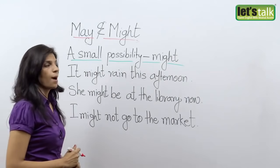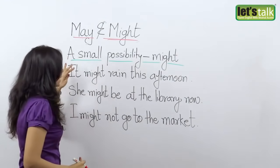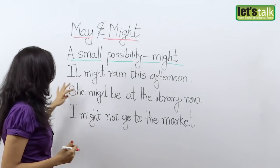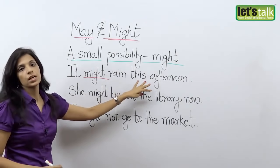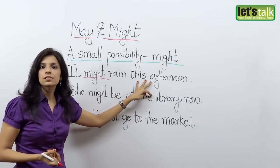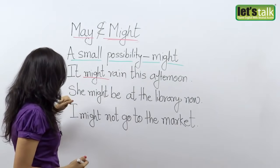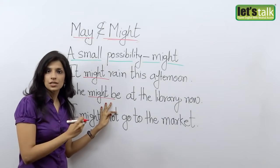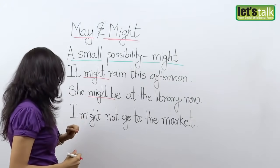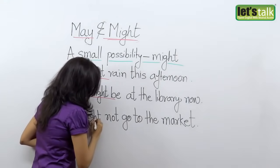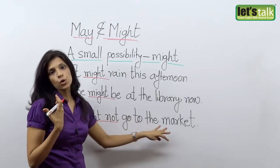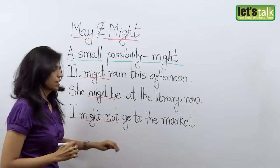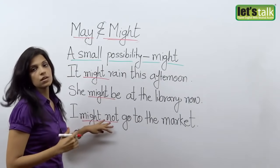Now let's take a look at how might is used. We use might when there is a small possibility or a bleak chance of something happening — it's less possible. For example, 'It might rain this afternoon' — when you use might, it means the chances are very less. In my next example, 'She might be at the library now' — again, you're not sure, and there are very few chances she might be there. In my third example, 'I might not go to the market' — the probability of you going is higher, but there's a small chance you just might not go. When negative, you use might not.